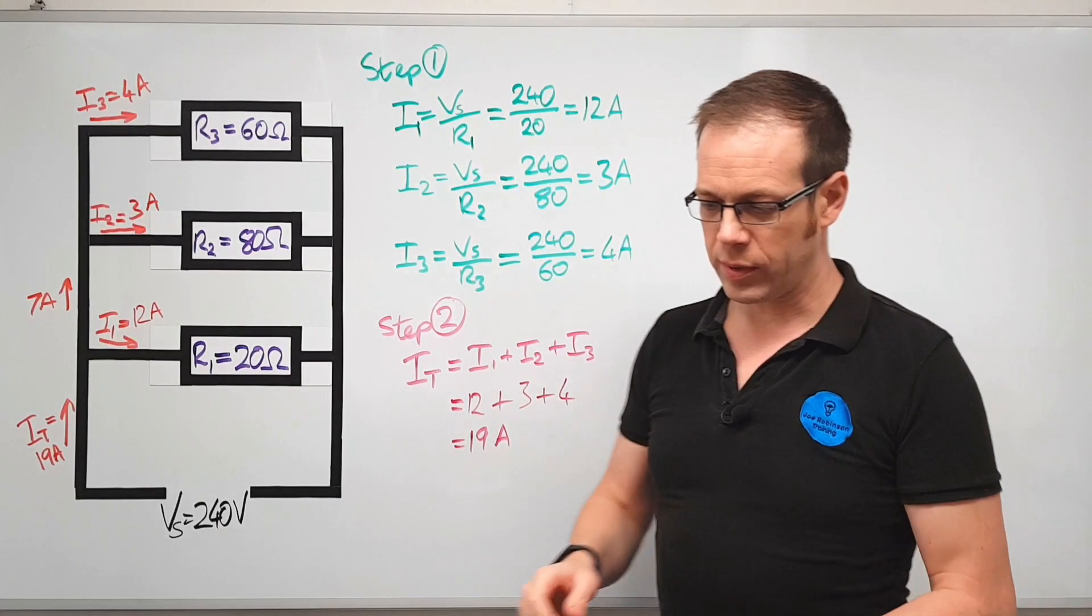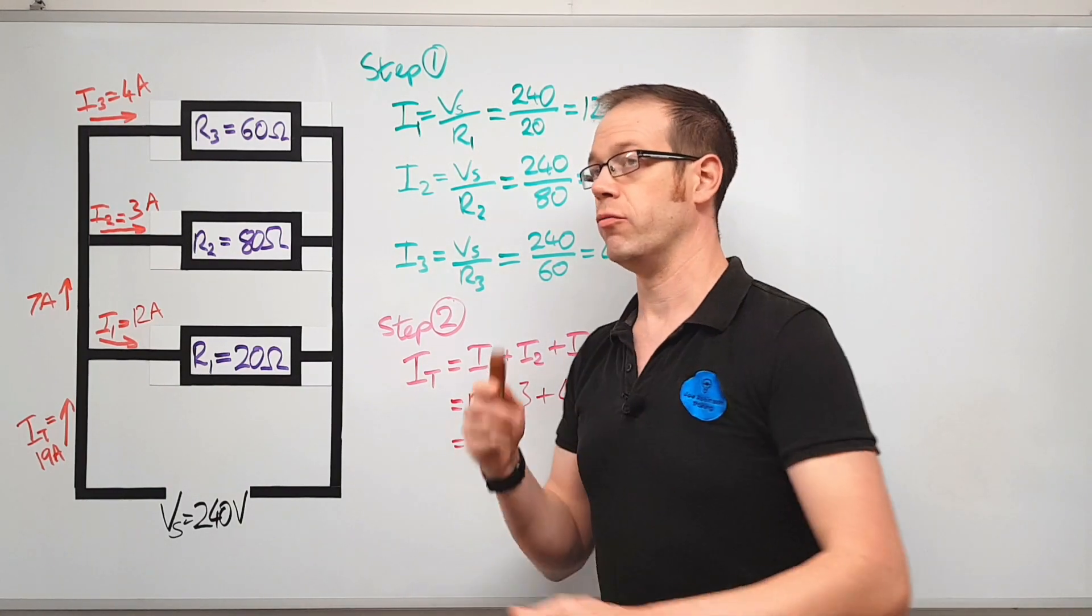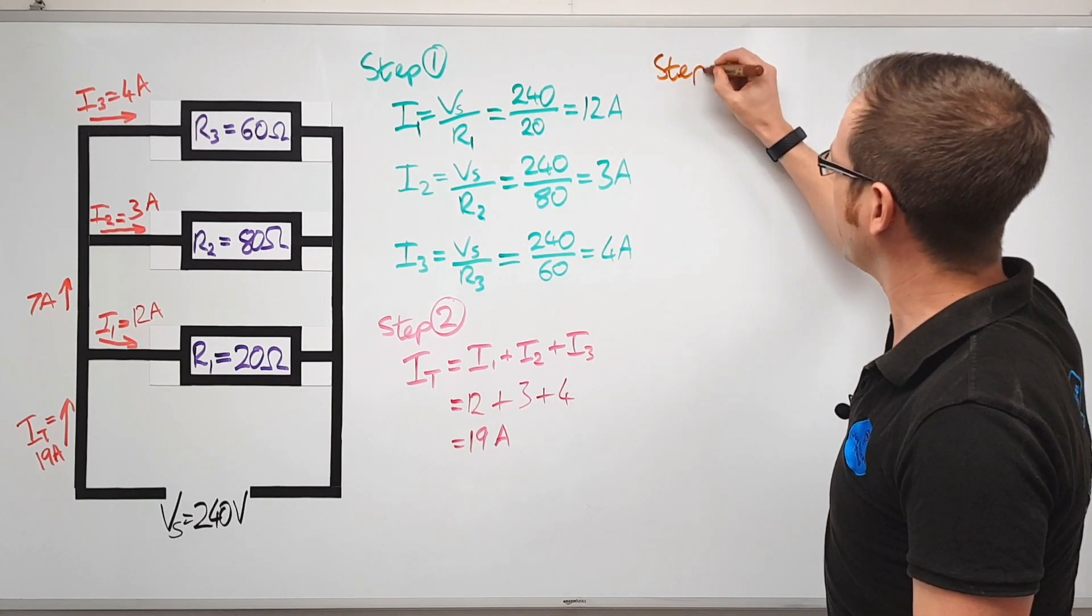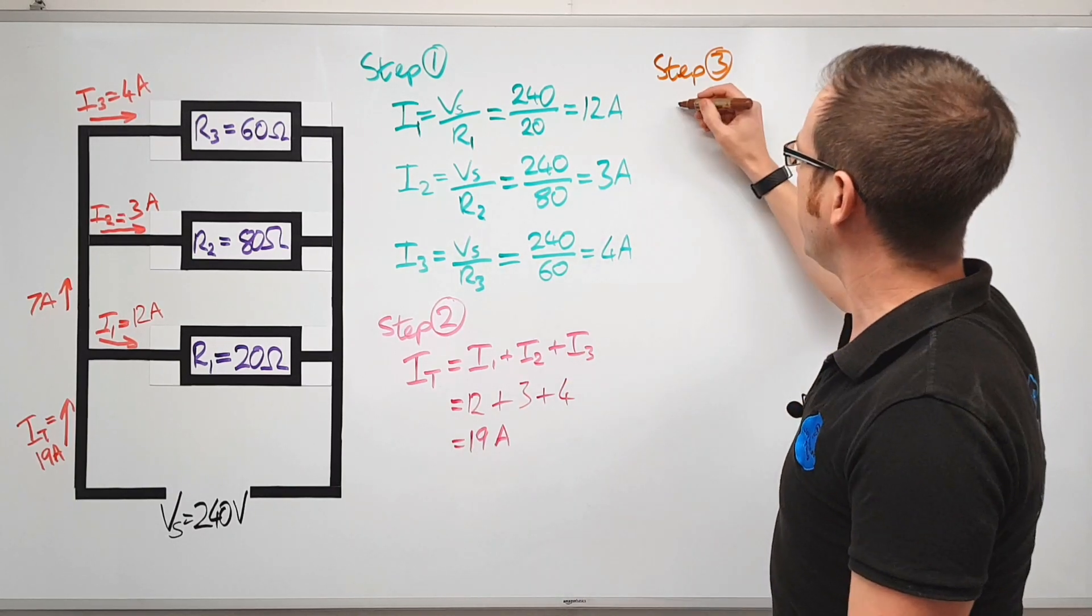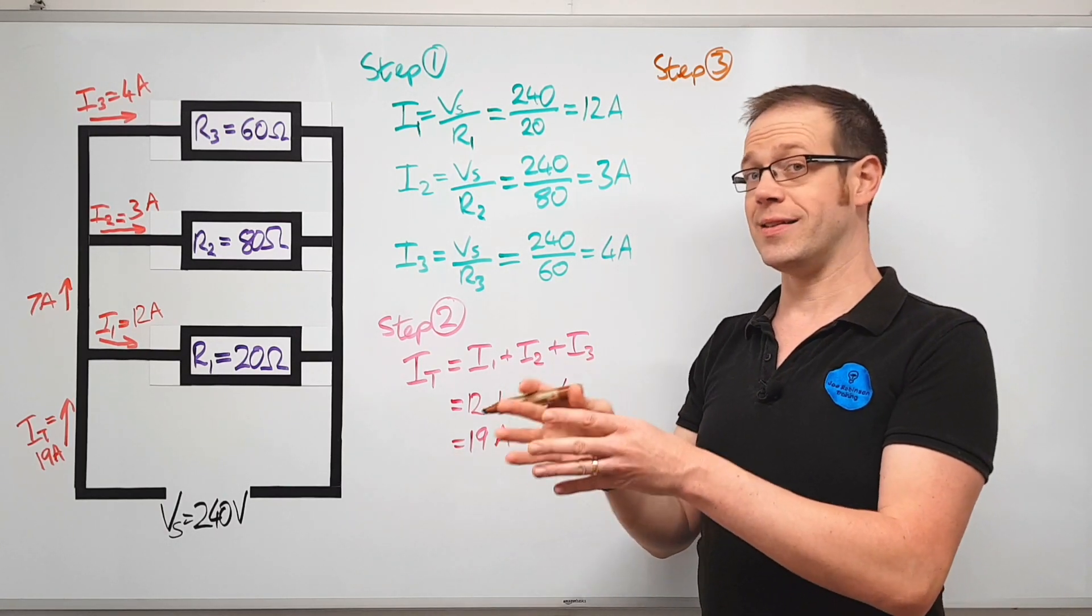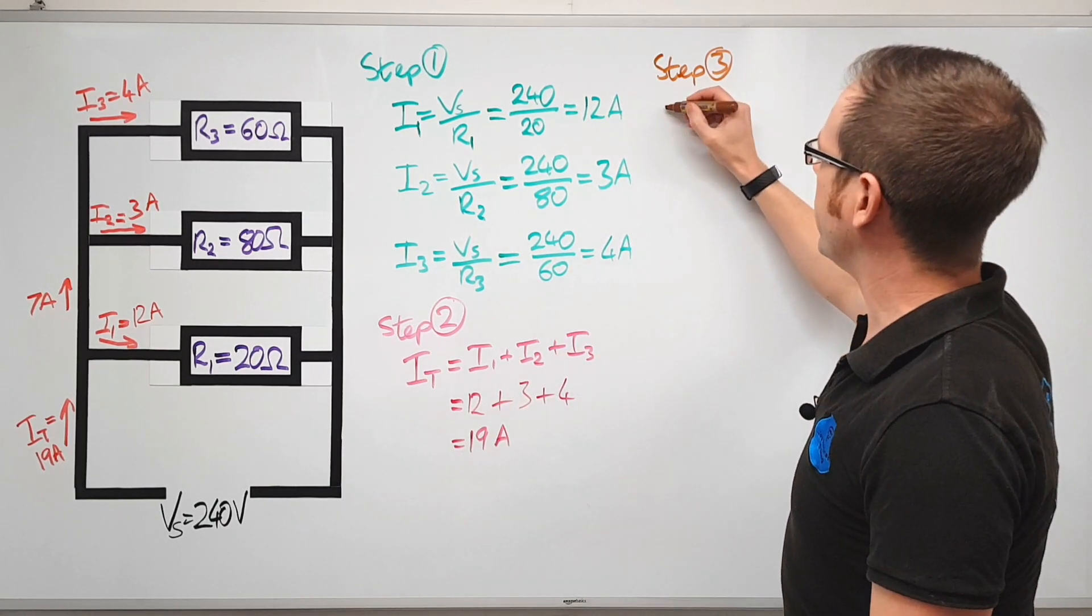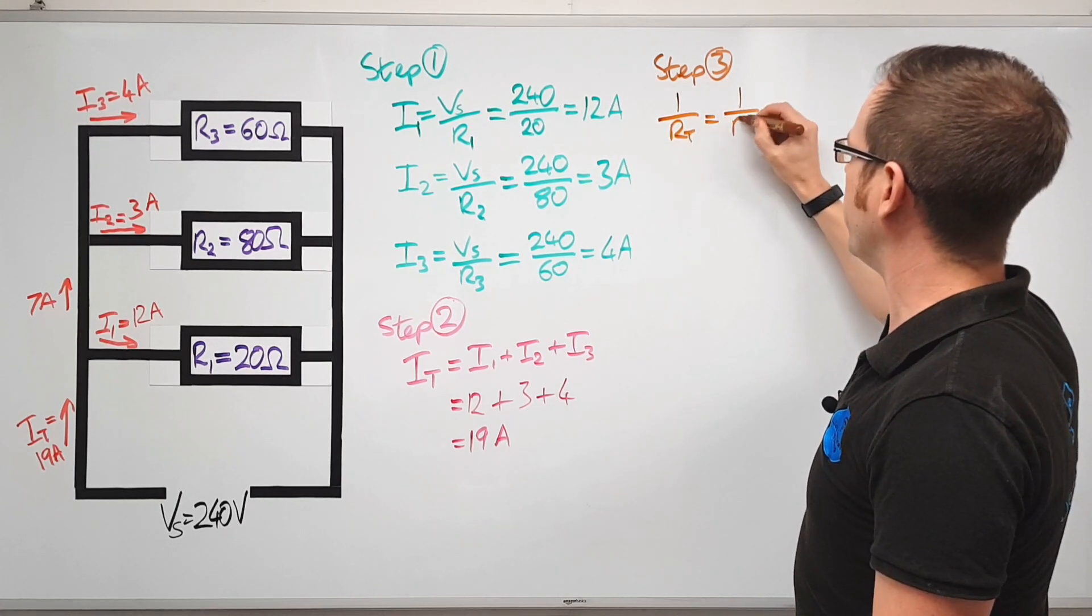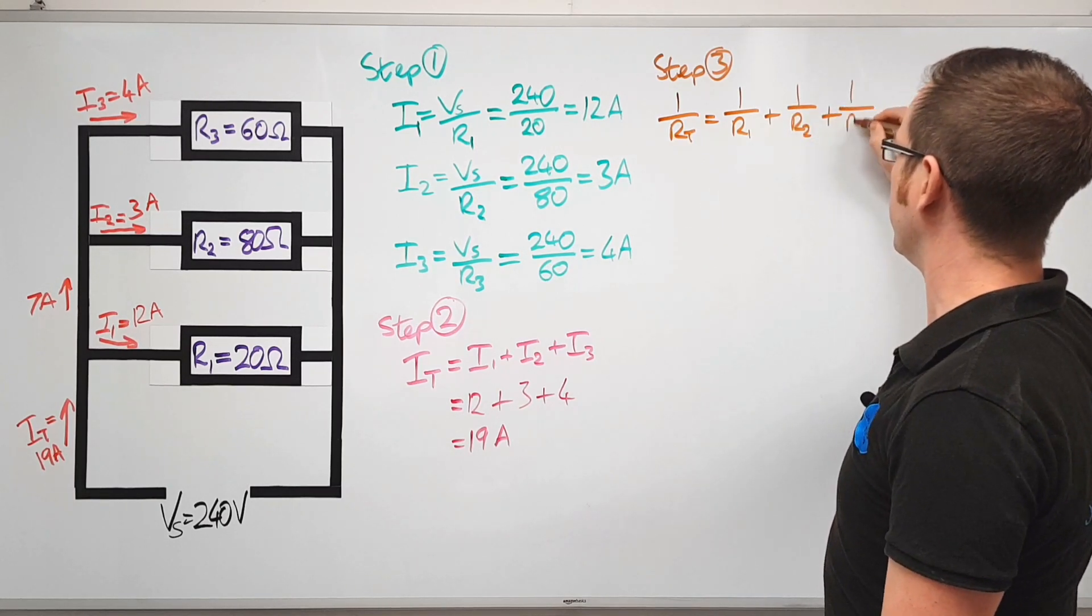What we're going to do is figure out what the total resistance of the circuit is. So step three is to try and figure out what the total resistance of the circuit is. Here we're going to say, and you may remember this from when we did our calculations on resistors in parallel, that one over RT is going to be equal to one over R1 plus one over R2 plus one over R3.